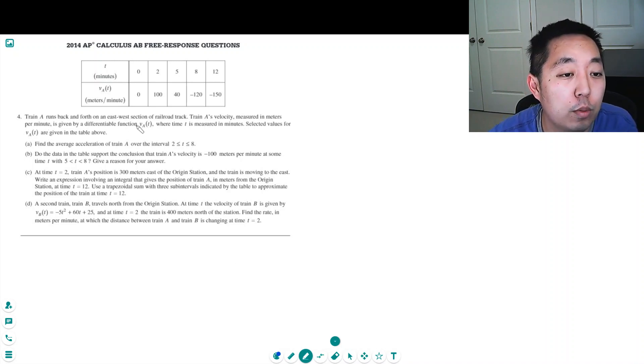Train A runs back and forth on an east-west section of railroad track. Train A's velocity, measured in meters per minute, is given by the differentiable function VA, where t is measured in minutes. Selected values for VA are given in the table below.